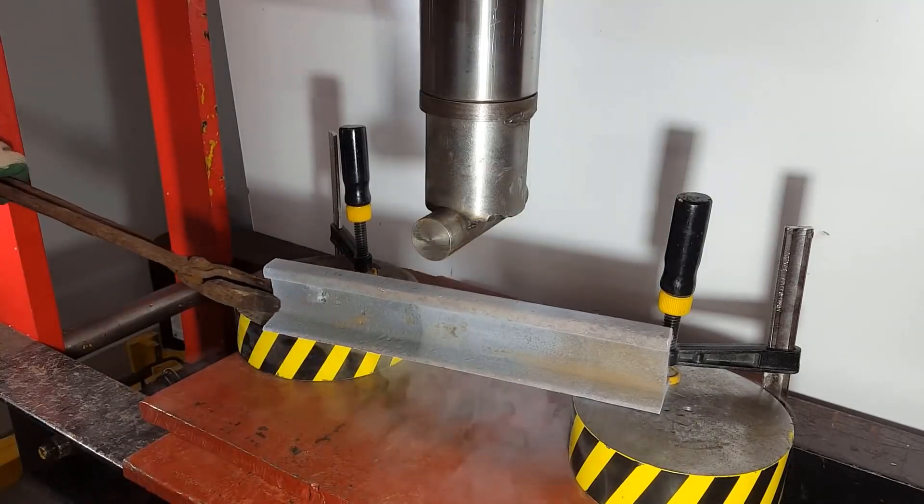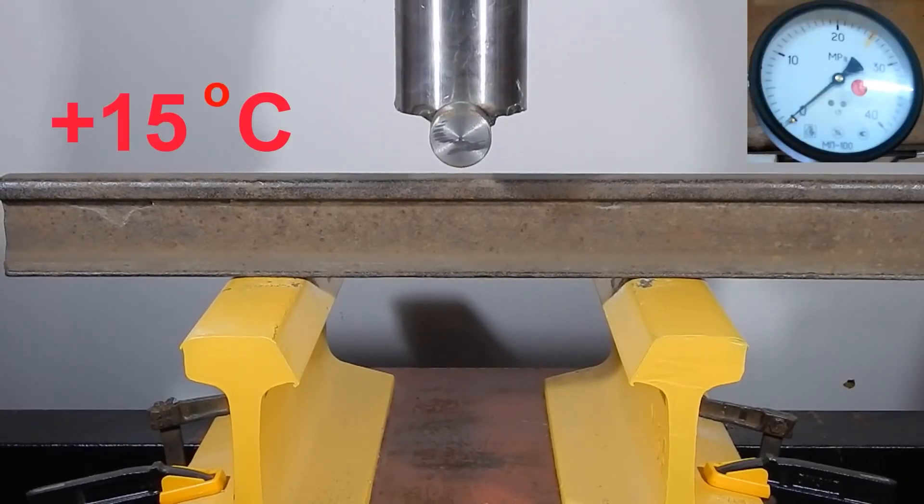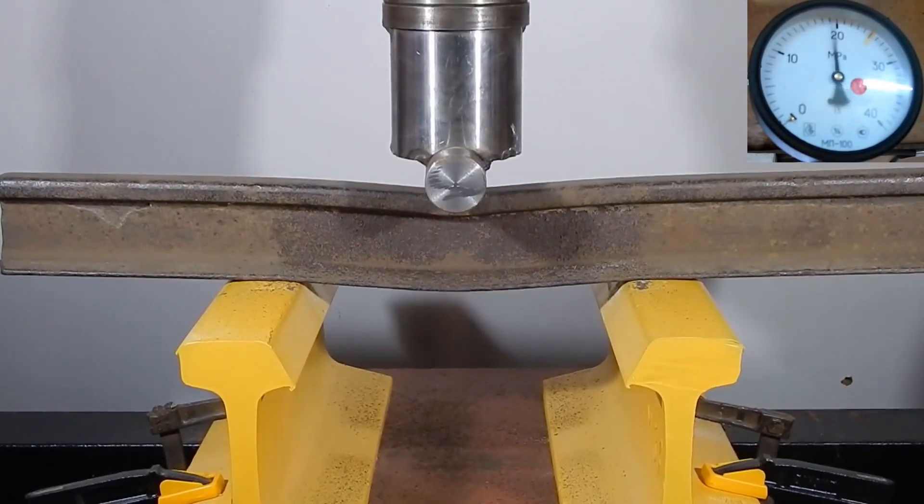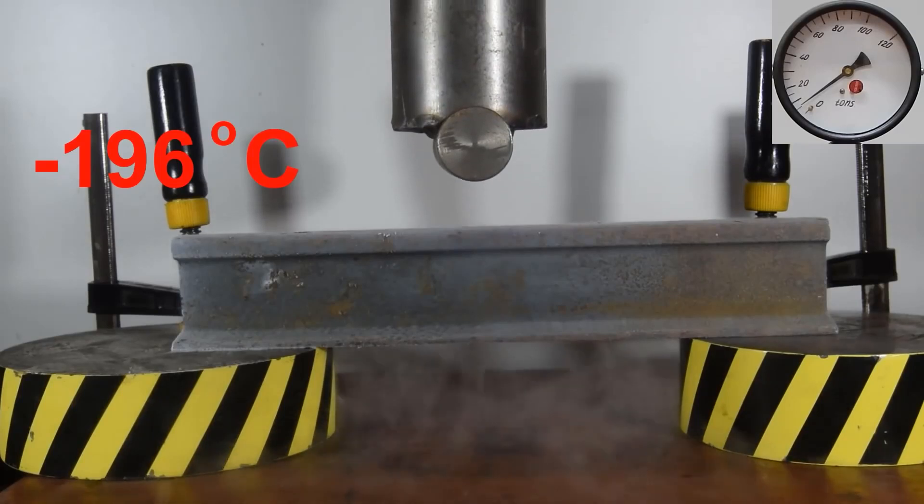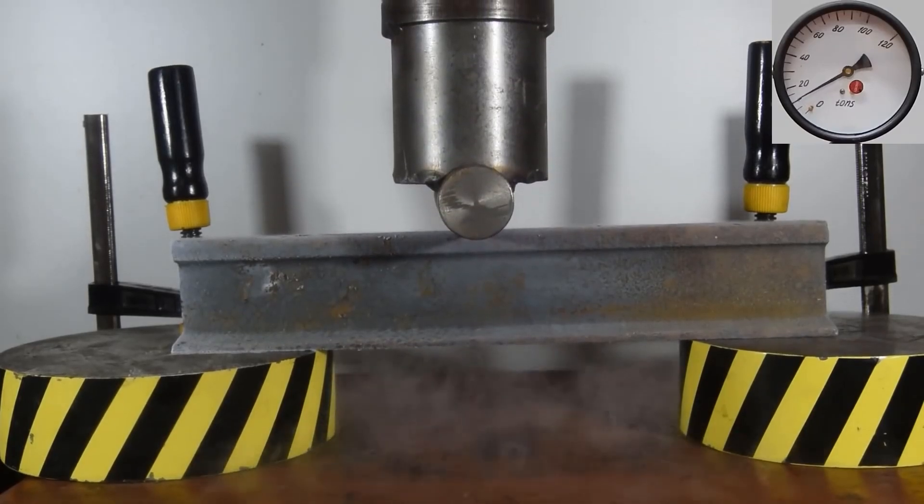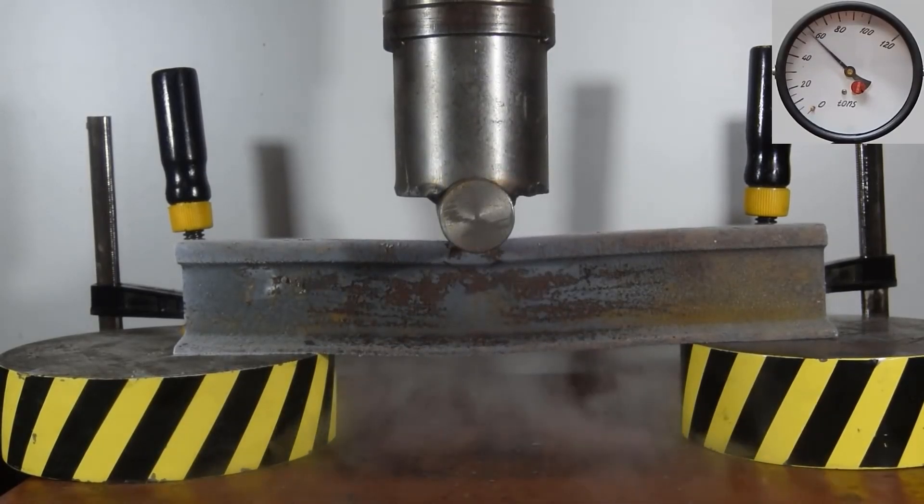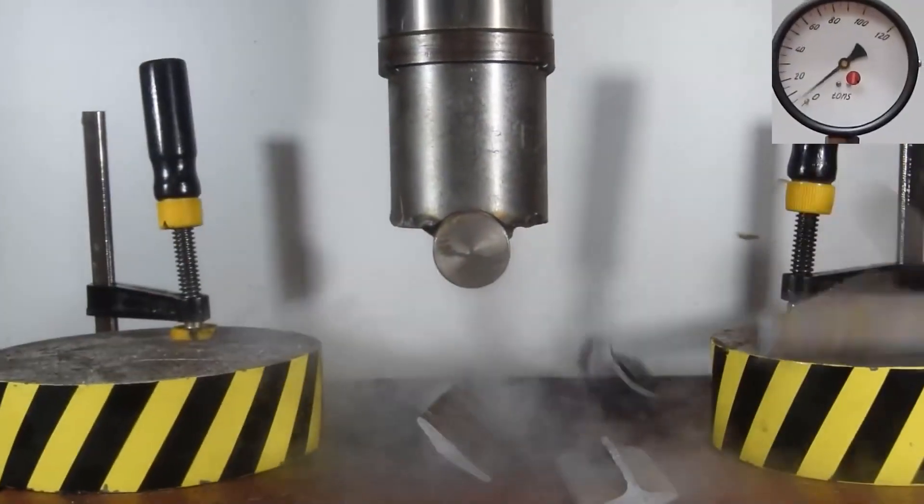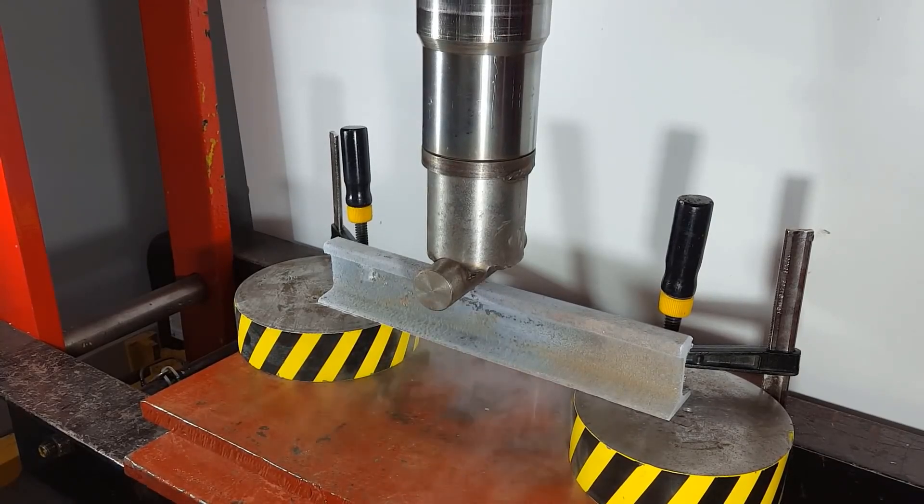And now let's try to break a small rail. Previously we couldn't break it, only bend it. But here, the cold was clearly not very good for him.